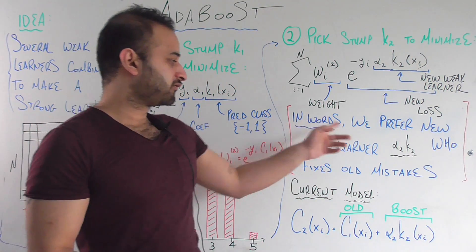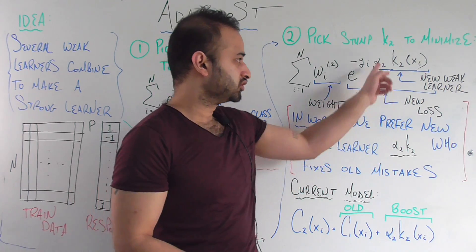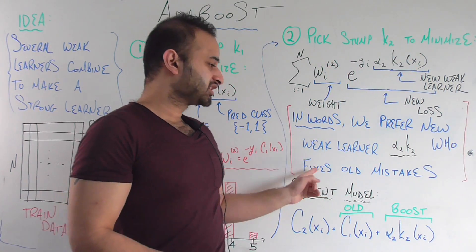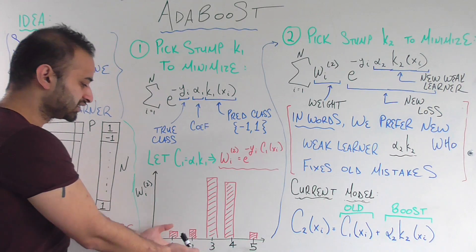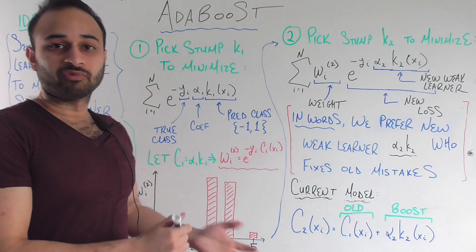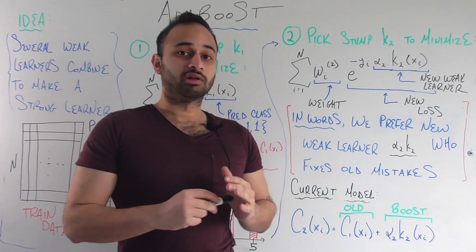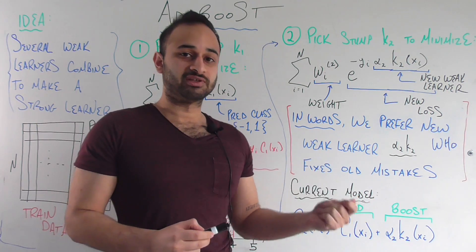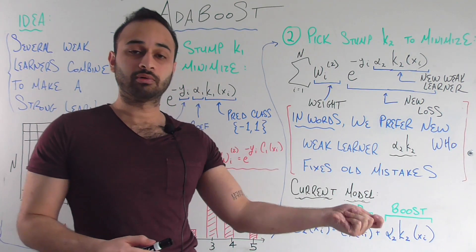So in words, we prefer a new weak learner, alpha two K2, who fixes old mistakes. We take a look at the biggest problems from the previous weak learner, and we pick the new weak learner who is going to fix these mistakes — minimize them, take them closer to zero.